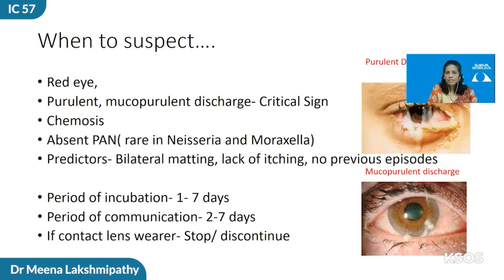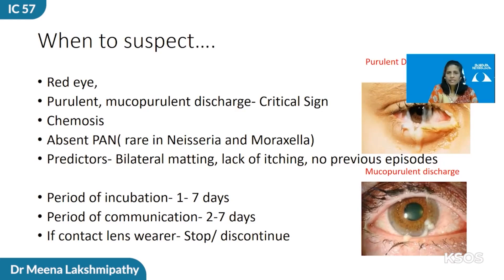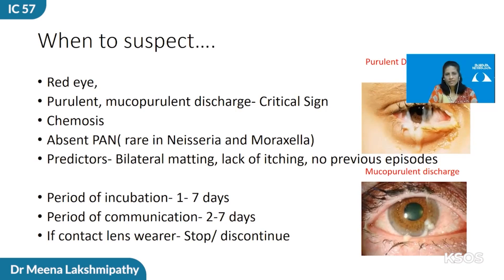When do you suspect bacterial conjunctivitis? The critical sign is the presence of mucopurulent or purulent discharge. Purulent discharge is more severe with significant matting of the lids due to pure pus, while mucopurulent involves some mucus adherent to it and is of less severe symptomology. There is usually absence of preauricular lymphadenopathy, although certain cases of Neisseria and Moraxella can produce some lymphadenopathy. Predictors of bacterial conjunctivitis include bilateral matting, lack of itching, non-recurrent nature, and a shorter incubation period than viral conjunctivitis.